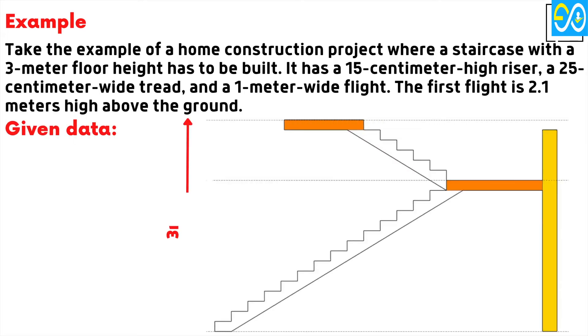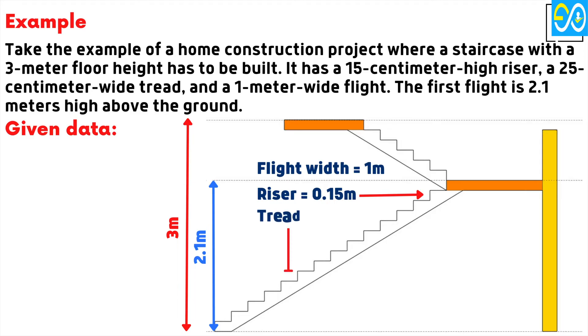Given data: height of floor equals 3 meters, first flight height equals 2.1 meters, flight width equals 1 meter, riser equals 0.15 meters, tread equals 0.25 meters.